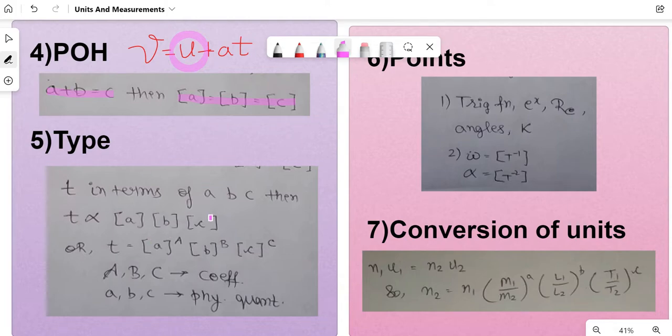Next is a type of problem which usually comes in the exam. If they have asked you to find a quantity T in terms of ABC, where ABC are physical quantities, the first step is to write T is directly proportional to A^a, B^b, C^c. Keep in mind ABC are physical quantities - it could be time, gravitational constant, or so on. Then you write T equals k A^a B^b C^c, where a, b, c are coefficients you will find by equating the dimensions.